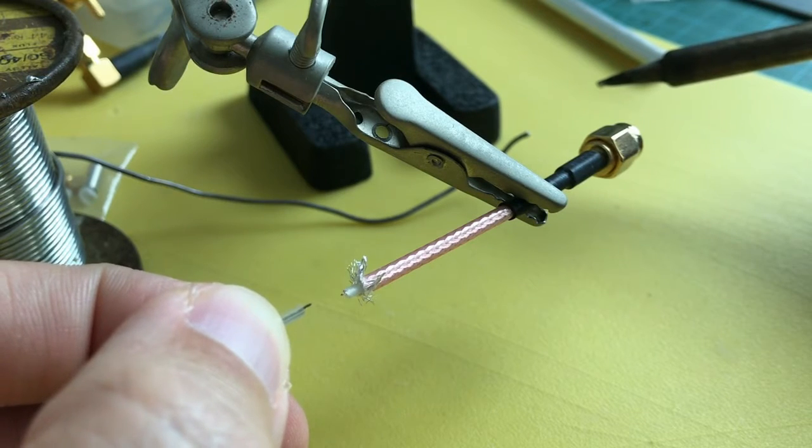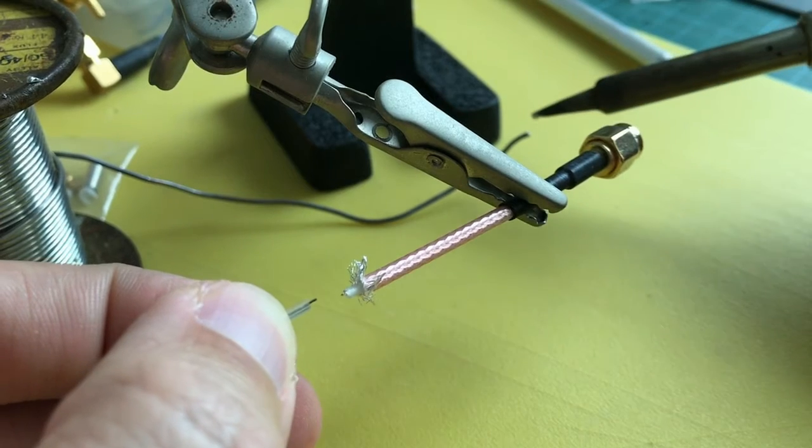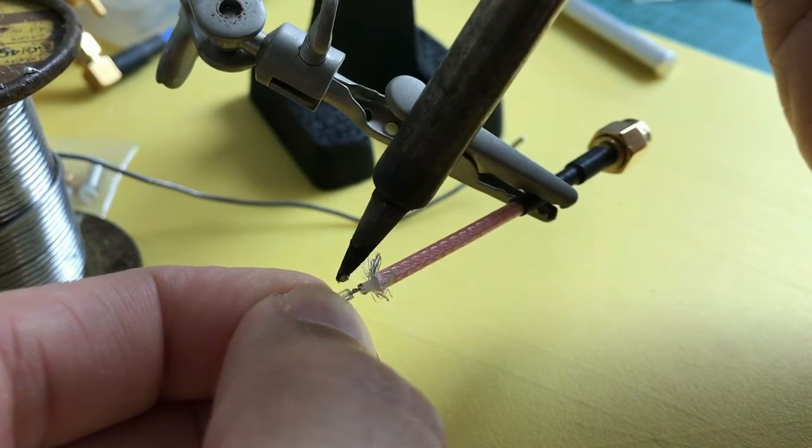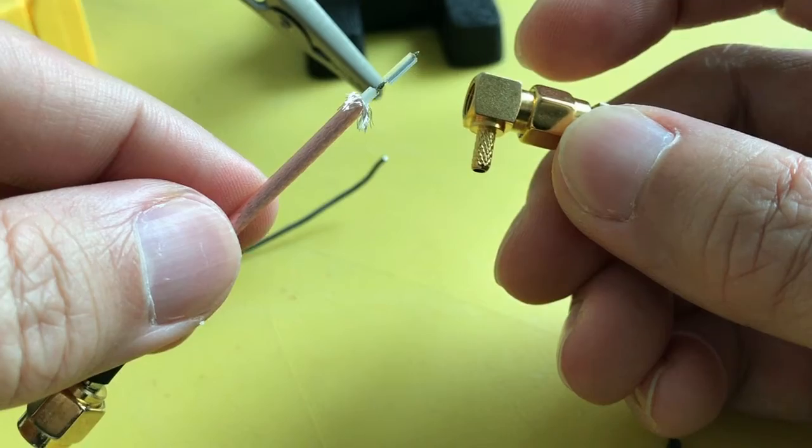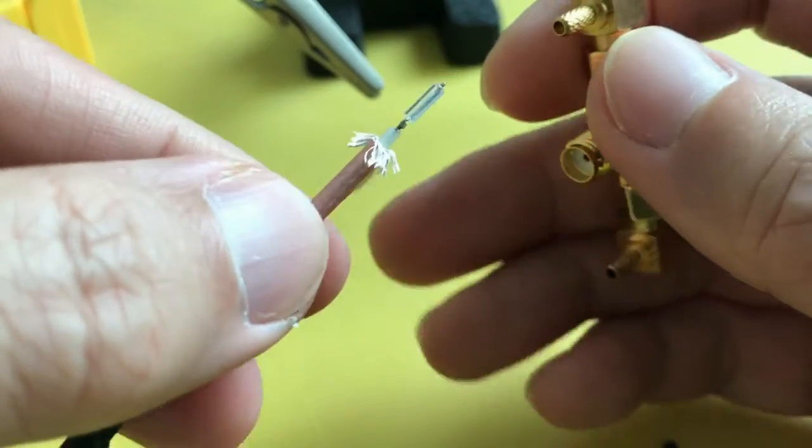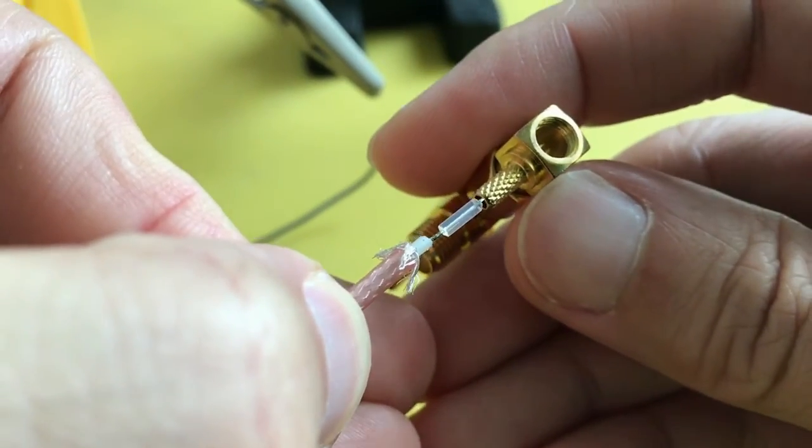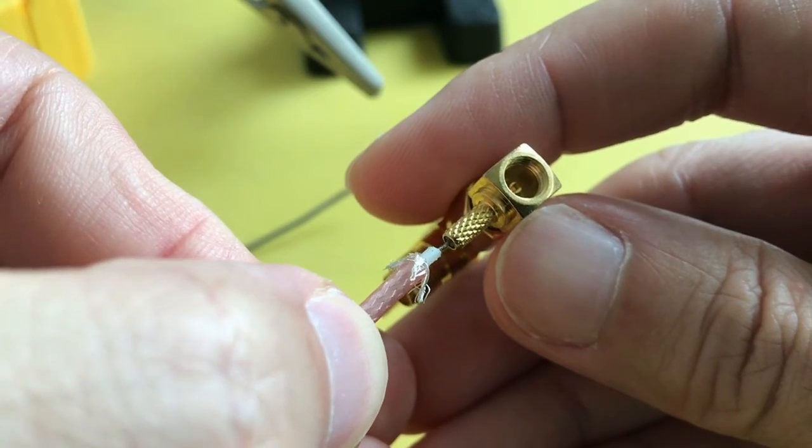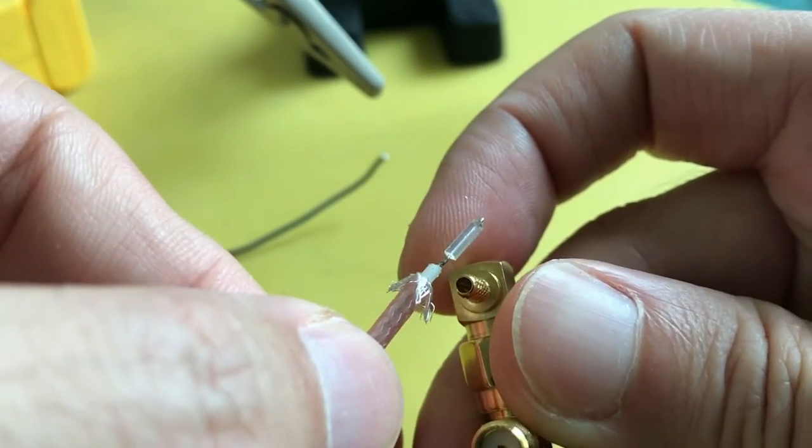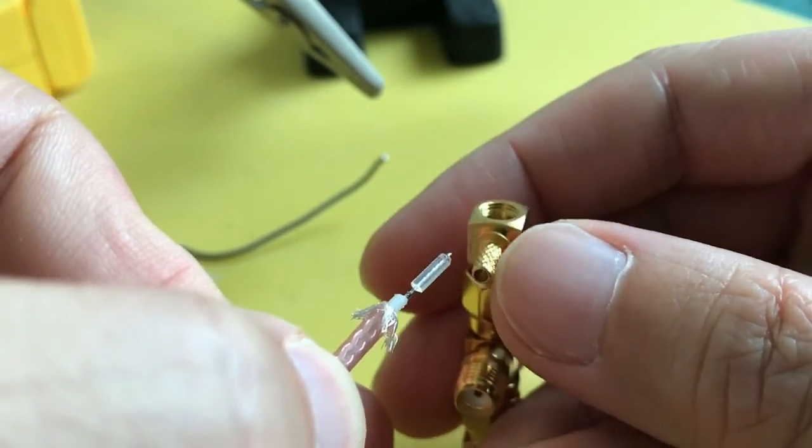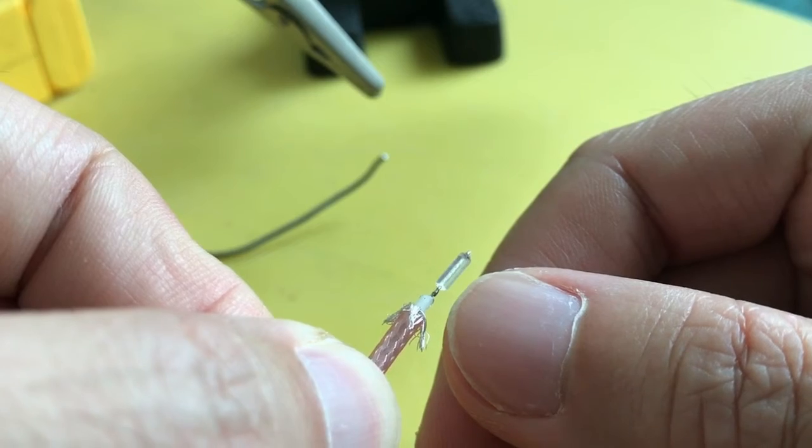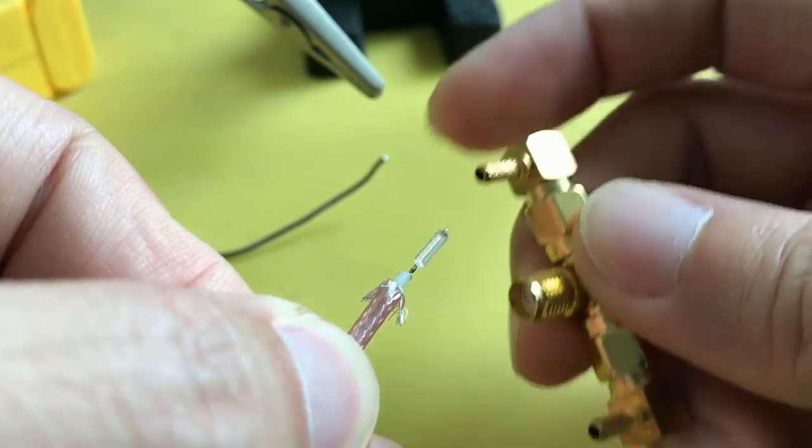Alright, right now I'm soldering one quarter wave transformer to the RP-SMA pigtail. There you go. At this stage if you try to attach the RP-SMA plug to this pigtail by doing so, there's a risk the signal which is exposed could short with the ground. So we need to put a heat shrink over the exposed area to prevent the signal from shorting with the ground. Alright, it's done and here's how the heat shrink looks like.